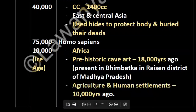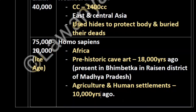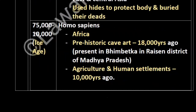18,000 years ago agriculture started; human settlements formed 10,000 years ago. A prehistoric keyword example is Bhimbetka caves in Raisen district of Madhya Pradesh. This is all about evolution.